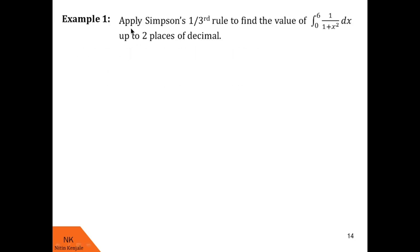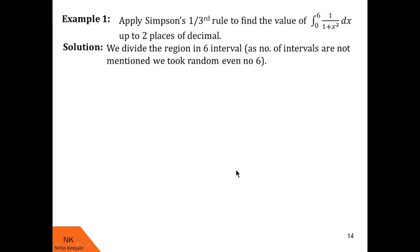In this first example, we are asked to apply Simpson's one-third rule to find the value of the definite integral of 1/(1+x²)dx over the limit 0 to 6, up to two decimal places. Since the step size is not mentioned, we will divide the region into 6 equal intervals, so step size will be (6−0)/6, that is h = 1.